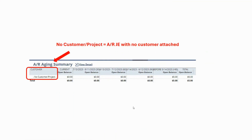When we are working with historical trial balance uploads, we not only need to be sure that we are uploading the correct balances per account, but we also need to be sure that we are not incorrectly affecting the aging reports. In other words, we don't want to see a 'no customer/project customer' in the AR aging summary report. This happens when you create a journal entry in NetSuite for accounts receivable or accounts payable and you don't attach a corresponding customer or vendor to that transaction.